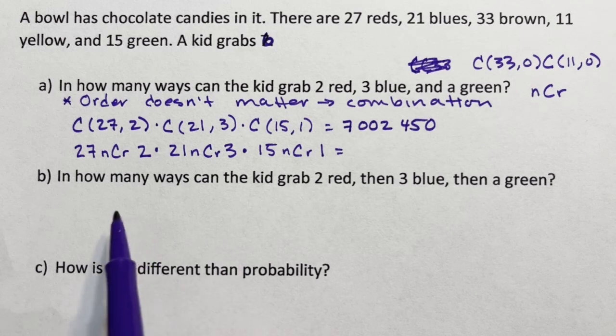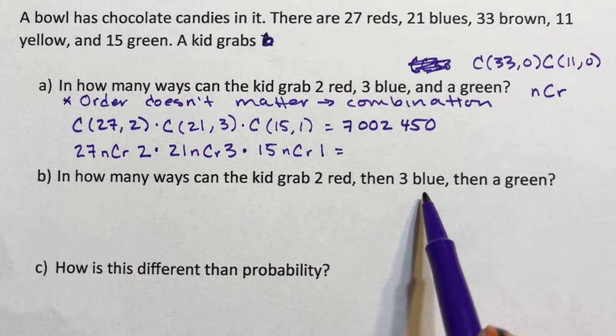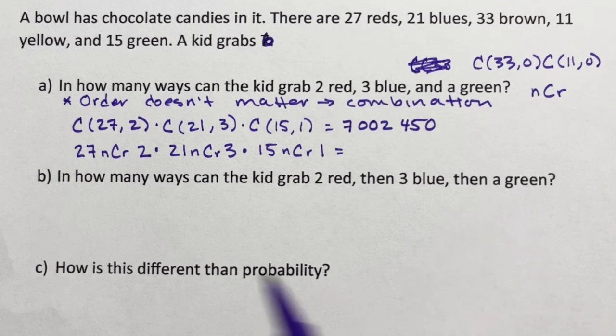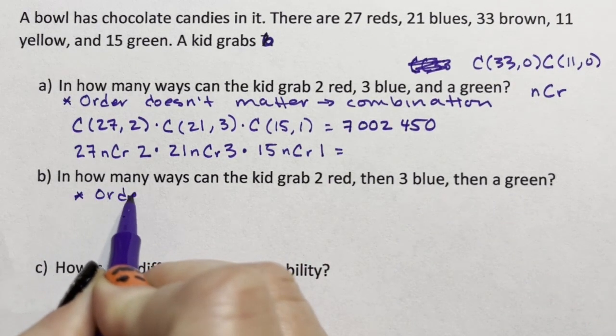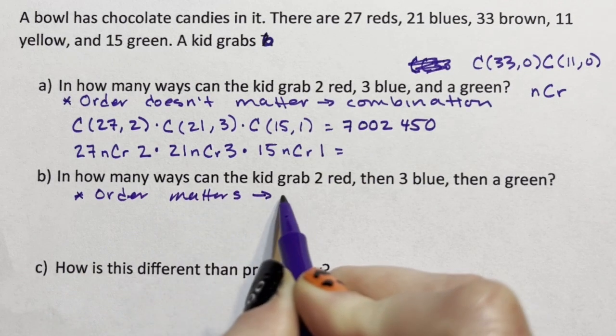Now for this one, if the kid grabs a red and then grabs a red and then grabs a blue and then a blue and then a blue and then a green, in this case order matters, so in this case we're using permutation.